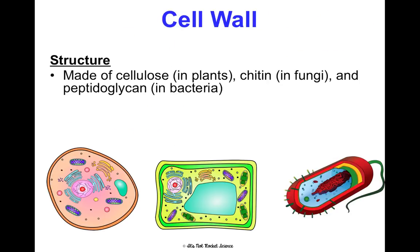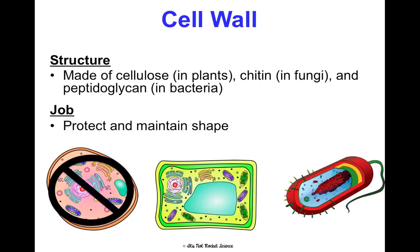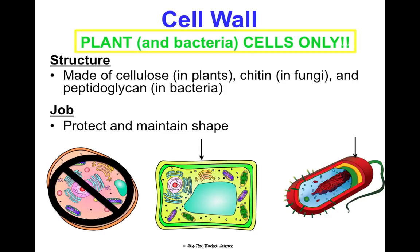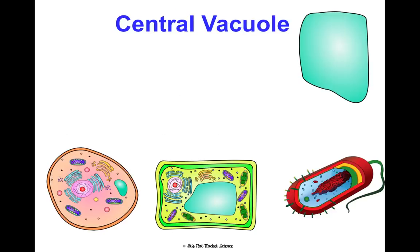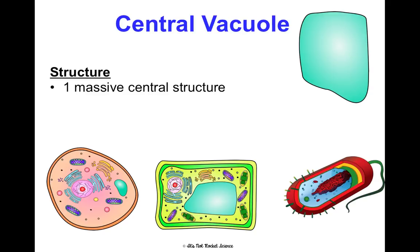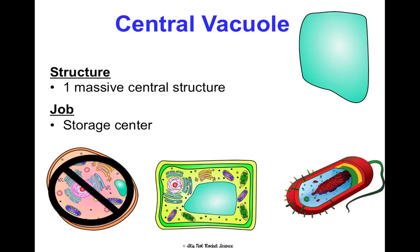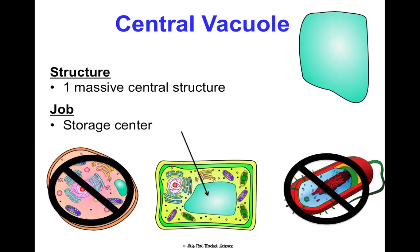Cell walls can be made of different materials depending on cell type — plants, fungus, or bacteria each have different compositions. The cell wall basically protects the cell and maintains its shape. It's not found in animal cells, but it's the outer layer in plant cells and in bacteria. The central vacuole is a plant-specific organelle — just one massive central storage structure. It's not in animal cells or prokaryotic cells; it sits in the middle of the plant cell.